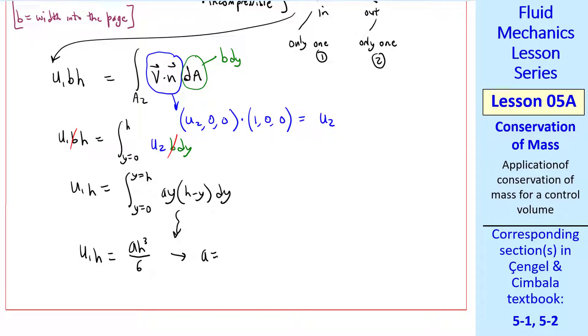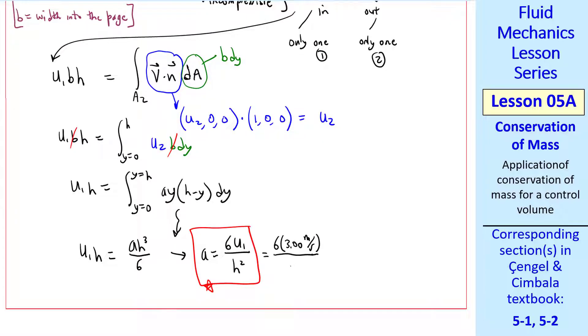One of the H's cancel, and we can solve for A. A is 6U1 over H squared. We plug in U1 and H, and we get our answer for A.